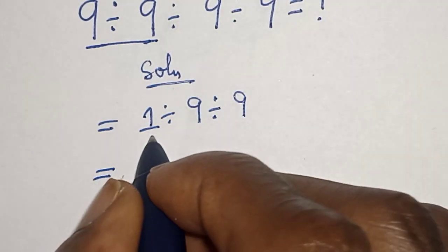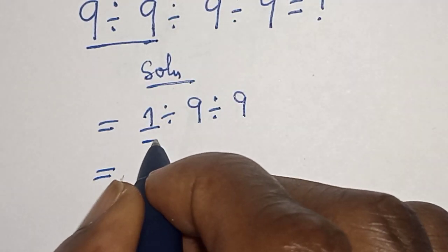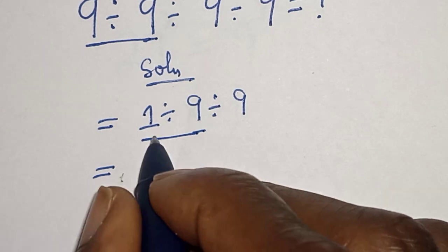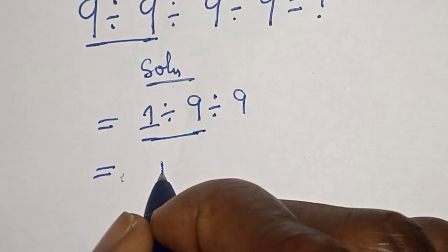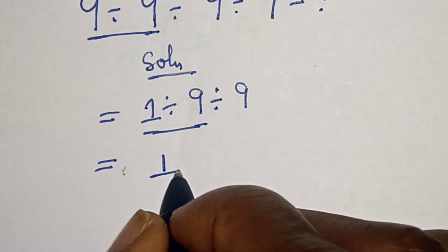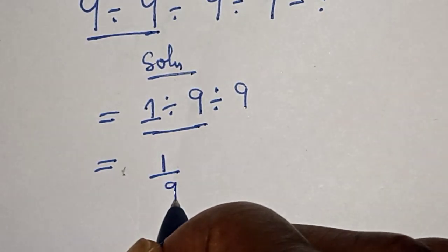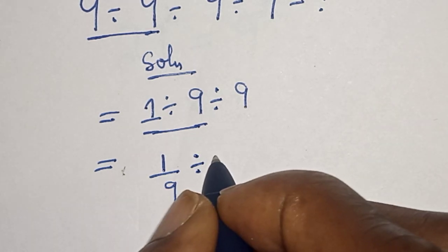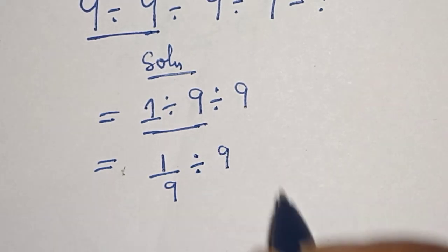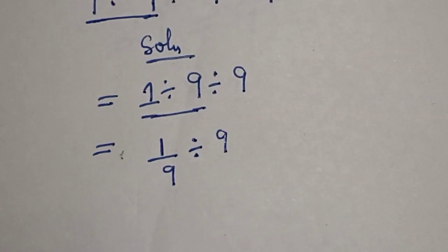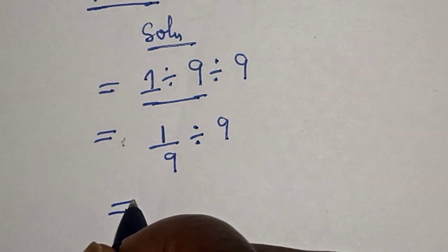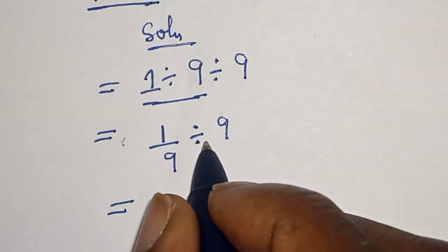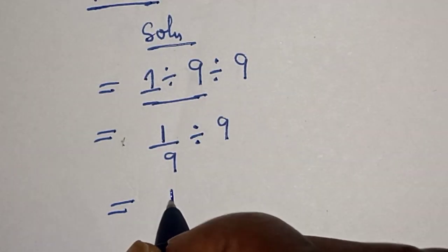This is equal to — let's work with this first tool again. This is 1 divided by 9, divided by 9. Then, this is equal to 1 divided by 9 divided by 9, which is 1.